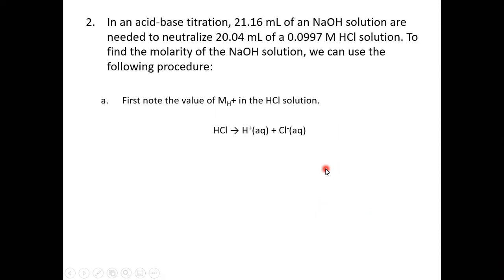Our next question goes one step further because now we're actually going to do a titration. We've used a certain amount of sodium hydroxide to fully titrate a sample of known hydrochloric acid solution, and we're going to use this information to find the molarity of our unknown sodium hydroxide. If you've read your procedure, you know the first part of the experiment is to standardize the sodium hydroxide solution — this is exactly that type of calculation.